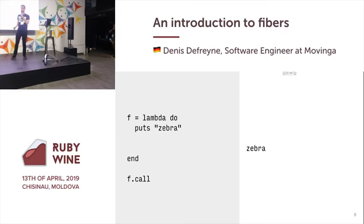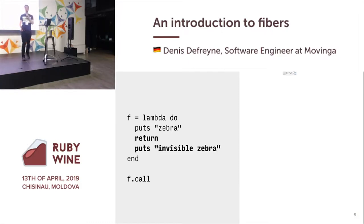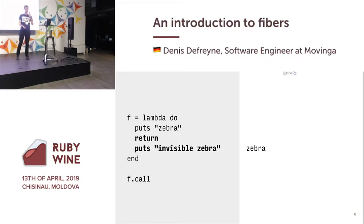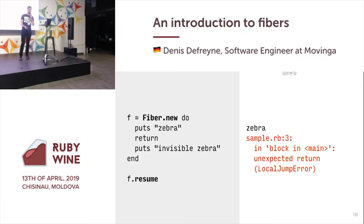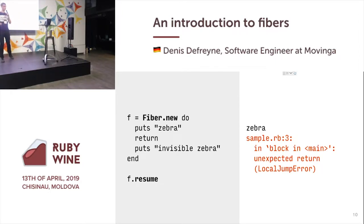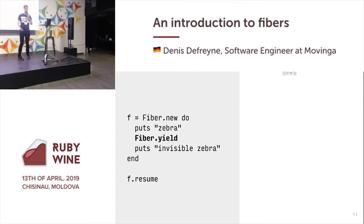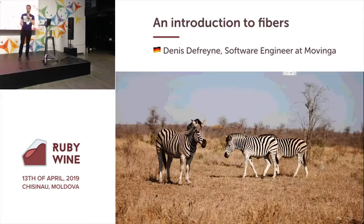This is a lambda that prints 'zebra'. So if I call it, it prints 'zebra', as you would expect. Now after printing 'zebra', I can return and then print 'invisible zebra'. If I call this, it will print just 'zebra', because after printing 'zebra' it will have returned. Now I can replace lambda with Fiber.new and replace call with resume. Then I will print 'zebra', followed by an unexpected LocalJumpError. The reason is you can't really return from a Fiber directly — what you can do is yield the Fiber, in which case this will print 'zebra' with no exception.